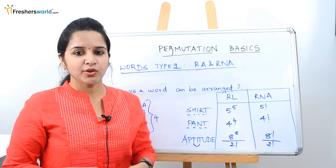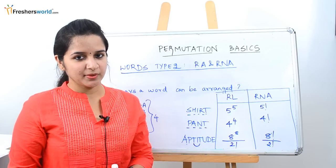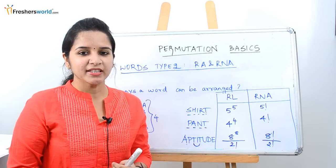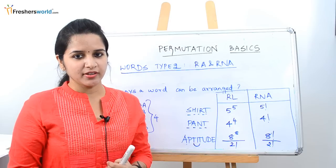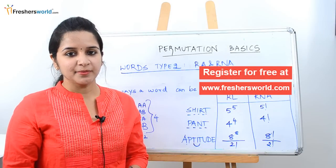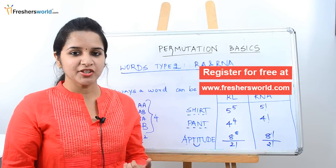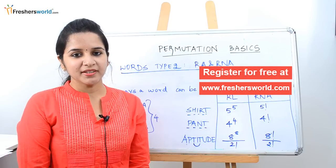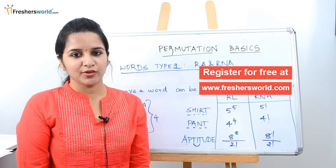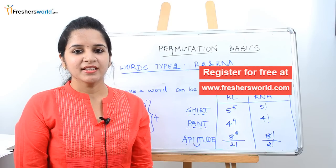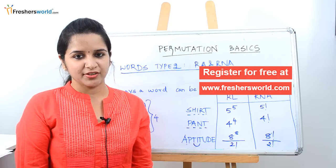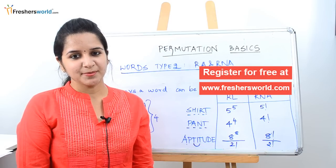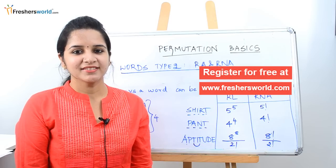In this video we dealt with two types of permutation problems: repeated letters and non-repeated letters, and repetition allowed versus repetition not allowed. If you are looking for a job, kindly register on our Freshersworld website. Like this video and subscribe to our channel. Thank you.